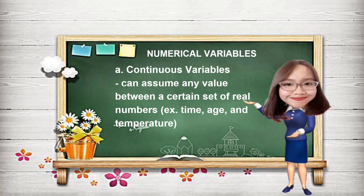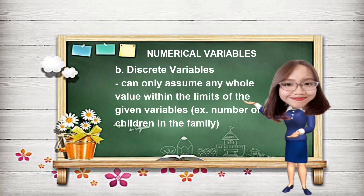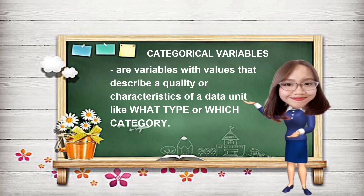Another example of numerical variables are discrete variables. These variables can only assume any whole value or number within the limits of the given variables. Some examples are the number of registered cars, number of business locations, number of children in the family, population of students, and total number of faculty members.